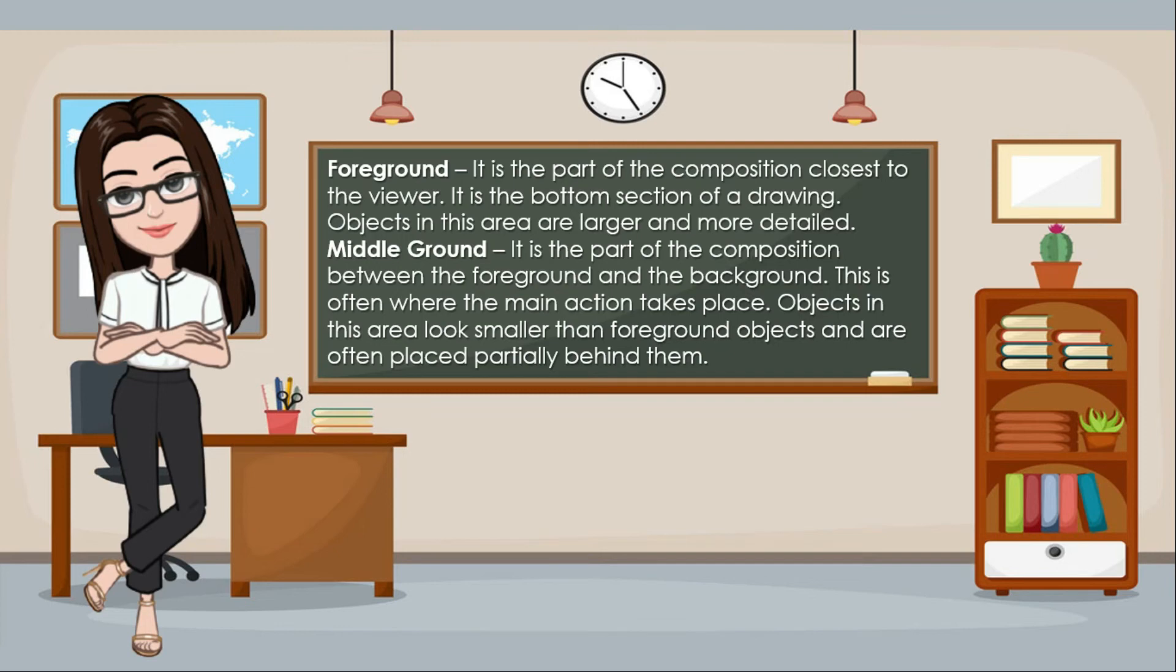Middle ground. It is the part of the composition between the foreground and the background. This is often where the main action takes place. Objects in this area look smaller than foreground objects and are often placed partially behind them.